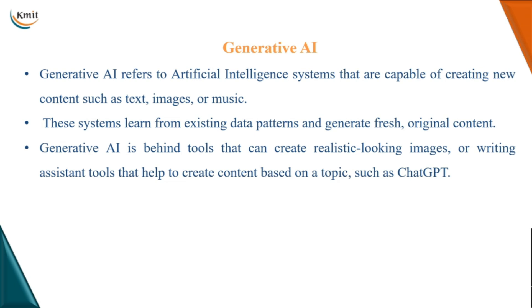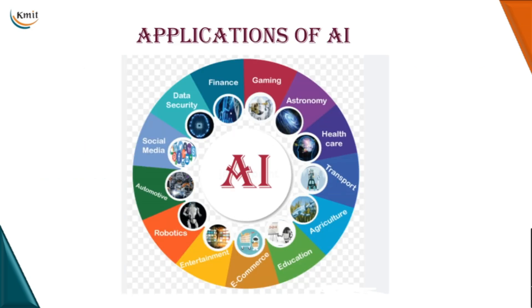We also often hear about generative AI, which refers to AI systems capable of creating new content — we generate text automatically, generate images, generate captions for images, generate music. AI is everywhere with generative AI. These systems learn from existing patterns and generate fresh, original content. Generating realistic images, writing assistant tools — ChatGPT is a generative AI model.